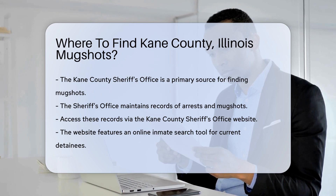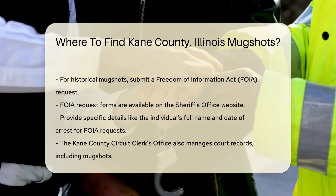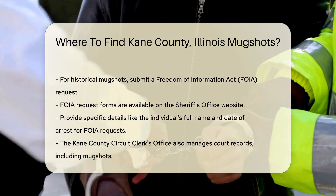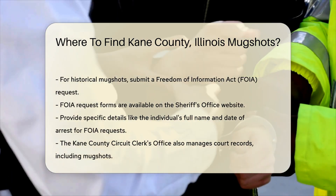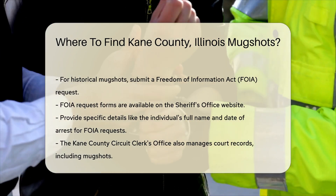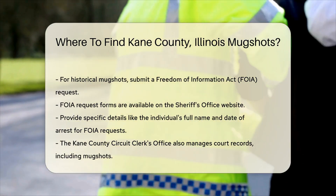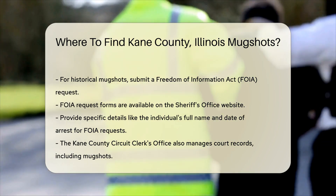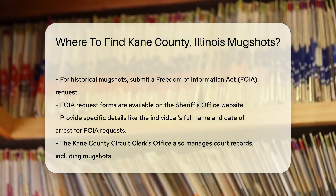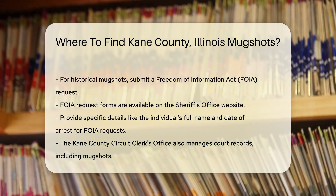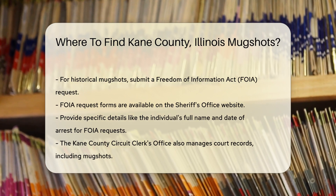If you're searching for historical mugshots, the process is a bit different. You may need to submit a Freedom of Information Act (FOIA) request. This can be done through the Kane County Sheriff's Office as well. The FOIA request form is available on their website. Be prepared to provide specific details, like the individual's full name and the date of arrest.